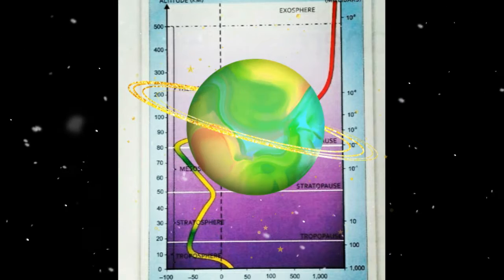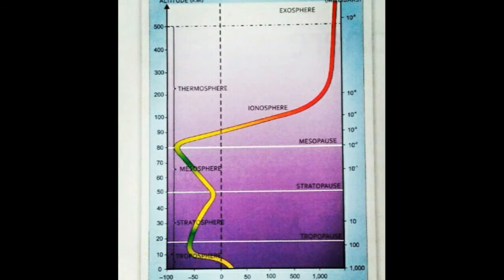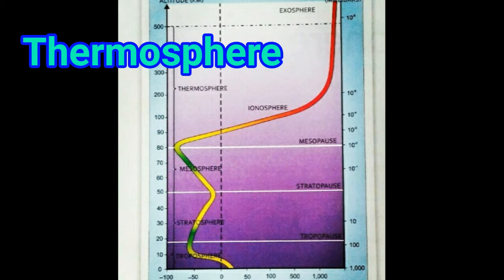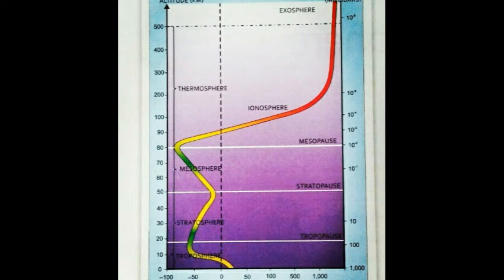The thermosphere lies above the mesosphere and extends from about 80 km to about 400 km above mean sea level. In this layer, the temperature increases with increase in height, reaching up to 1500 degrees Celsius. The part of the thermosphere is called the ionosphere as it has ionized molecules. This layer reflects low-frequency radio waves back to the earth and thus helps in long-distance communication.